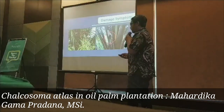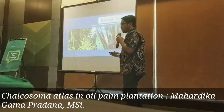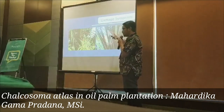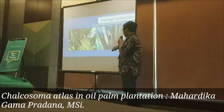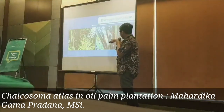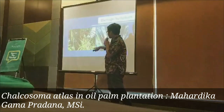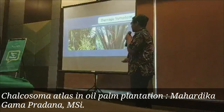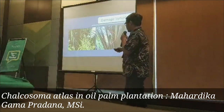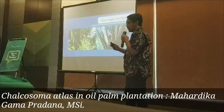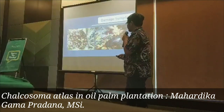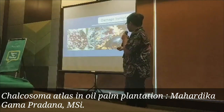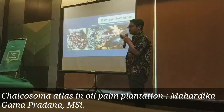Especially for Chalcosoma atlas, they attack the frond, but only make a hole in the frond, which causes the frond to break. This is different from the growing point damage caused by the rhinoceros beetle. Chalcosoma atlas also eats the mesocarp of the oil palm fruit, which contains the oil.